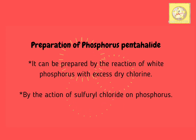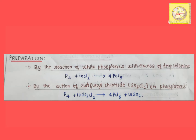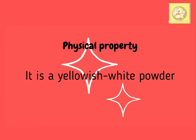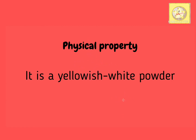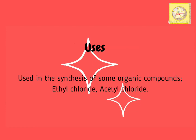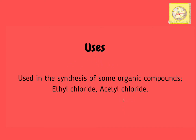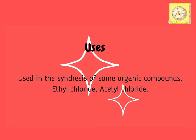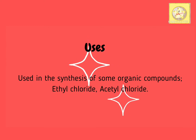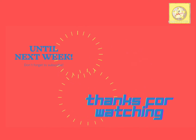Preparation: phosphorus pentahalide is prepared by the reaction of white phosphorus with excess dry chlorine, and by the action of sulfuric chloride on phosphorus. Physical property: phosphorus pentahalide is a yellowish-white powder. Uses: phosphorus pentahalide is used in the synthesis of some organic compounds, for example ethyl chloride and acetyl chloride.